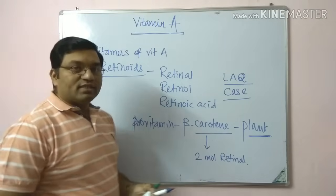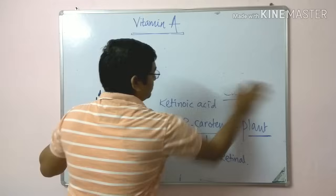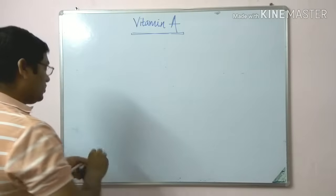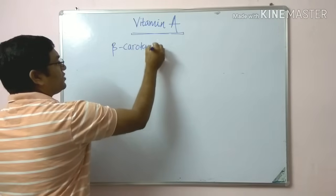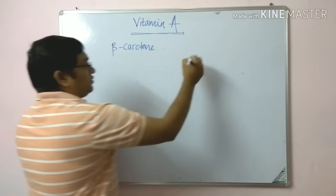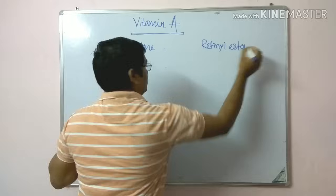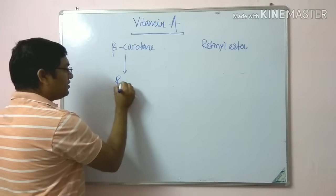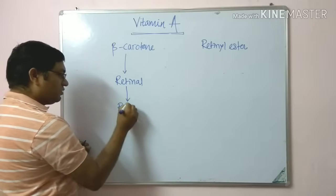In the diet, from plant sources we get beta-carotene, and from non-vegetarian sources there is retinol. Beta-carotene, by the action of dioxygenase, is converted into retinol, and by the action of retinol reductase it is further converted into retinol.